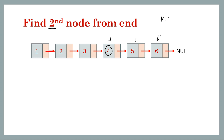Let's start with a basic case: the second node from the end. If we have to find the last node from the end, that will be the tail itself, so we can start from the beginning and stop when next becomes null. One of the base cases for the kth node would be k equal to 2. If you understand how to find the second node from the end, you can do it for any general value of k as well.